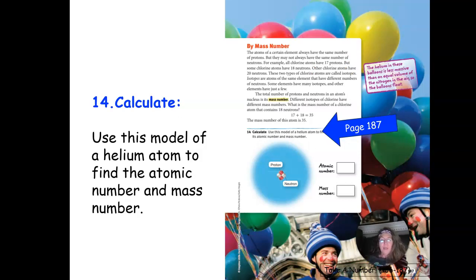Number 14 wants you to apply this knowledge. It wants you to use the model of the helium atom, so you're looking at this picture here, to find the atomic number and mass number. And so you will put those numbers here. Make sure to go back and read the definitions. If you didn't underline them or highlight them, you might want to do that or explain what they are out to the side so that you'll remember.